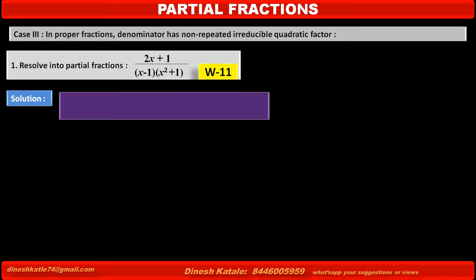The denominator of the given fraction has two factors. One factor, x minus 1, is linear. The other factor, x squared plus 1, is quadratic but irreducible and non-repeated. Therefore, we take numerator A for the linear factor x minus 1, and numerator Bx plus C — in linear form — for the quadratic factor x squared plus 1.